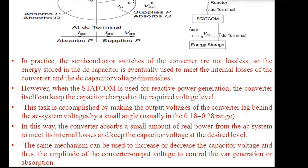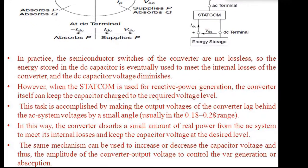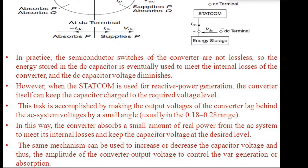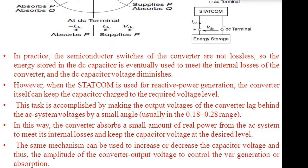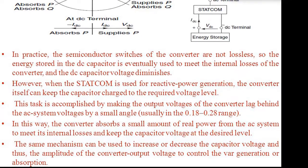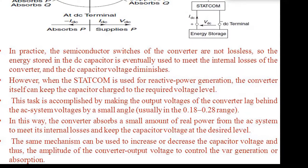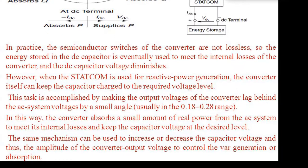In this way, the converter absorbs a small amount of real power from the AC system to meet its internal losses and keep the capacitor voltage at the desired level. The same mechanism can be used to increase or decrease the capacitor voltage and thus the amplitude of the converter output voltage to control the VAR generation or absorption.